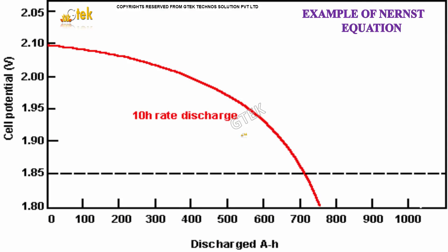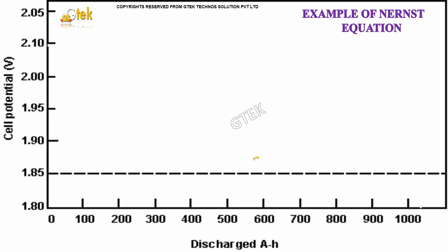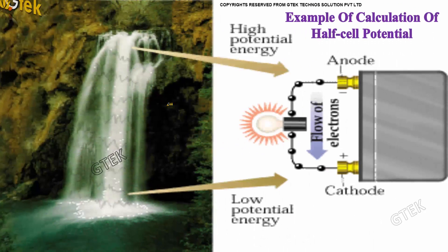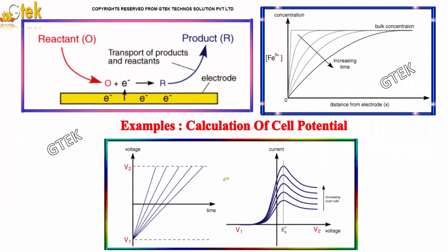This is an example of the Nernst equation, which we will be discussing. This one covers the calculation of half-cell potential, and this one is about the calculation of cell potential.